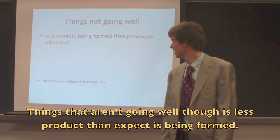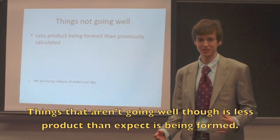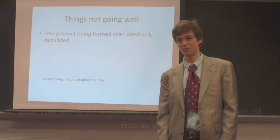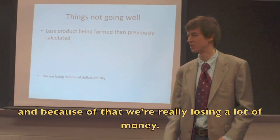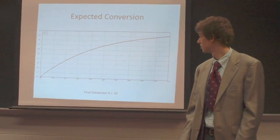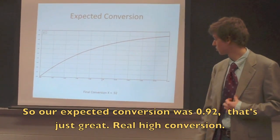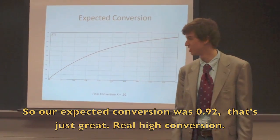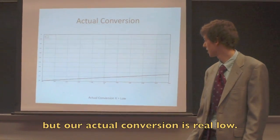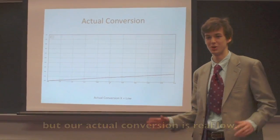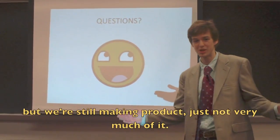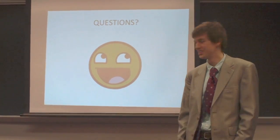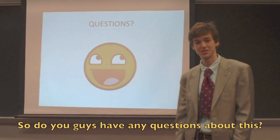Things aren't really going well though — less product than expected is being formed, and because of that, we're really losing a lot of money. Our expected conversion was 0.92 — that's real high conversion — but our actual conversion is real low. We're still making product, just not very much of it. Do you guys have any questions about this?